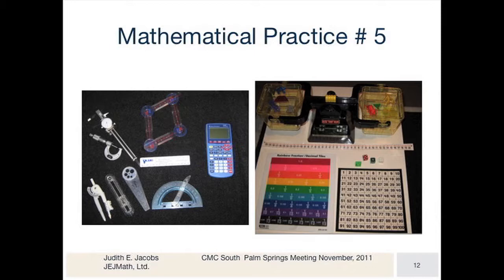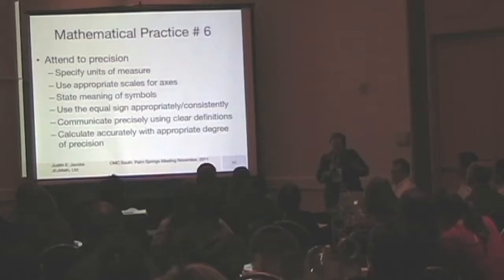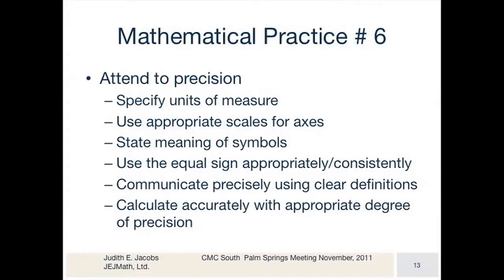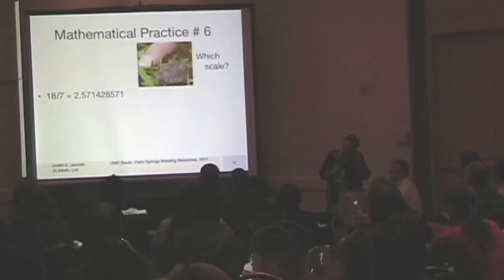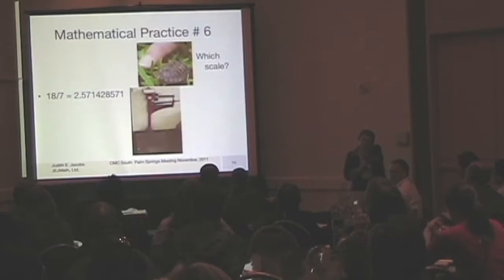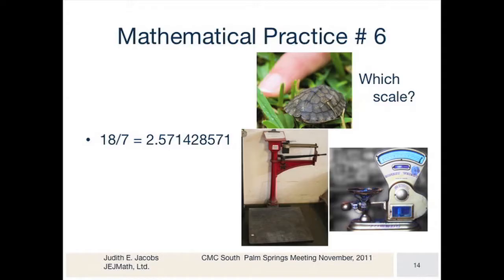The next one is precision, and this one really drives me nuts. My brain gives us a graphic calculator for everything to four decimal places — whether we're going to the moon or doing the circumference of a table, we do it to four decimal places. But there's another aspect of precision: if you want to weigh that little turtle, which scale do you use? Something we often don't think about.